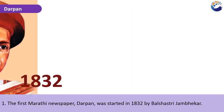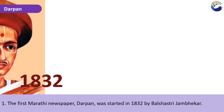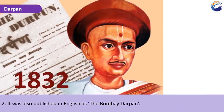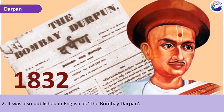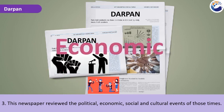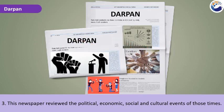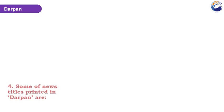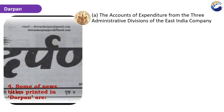The first Marathi newspaper, Darpan, was started in 1832 by Bal Shastri Jambhekar. It was also published in English as the Bombay Darpan. The newspaper reviewed the political, economic, social, and cultural events of those times. Some of the news titles printed in Darpan included accounts of expenditure from the three administrative divisions of the East India Company.